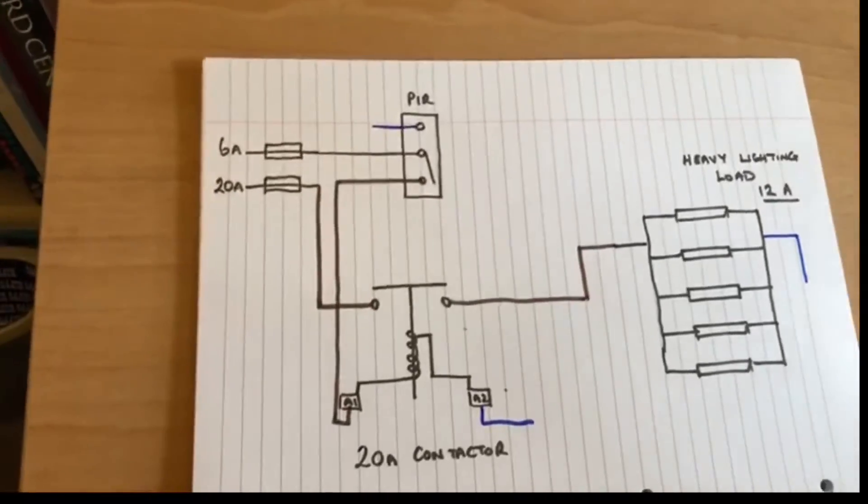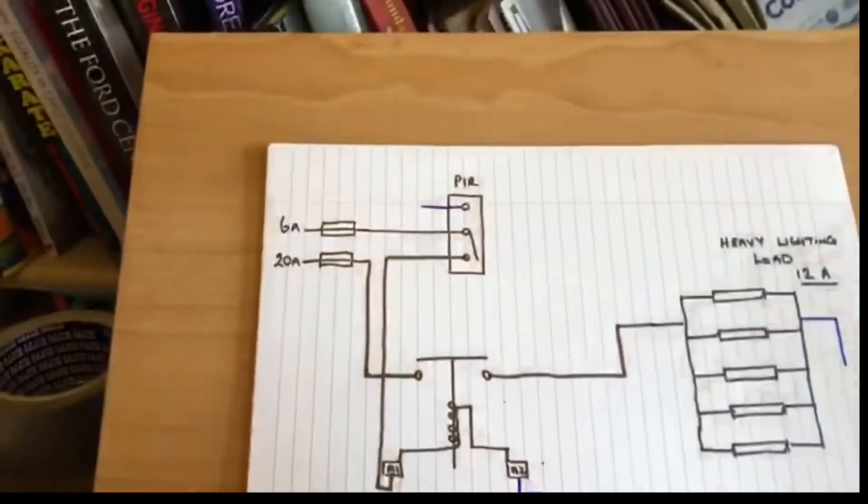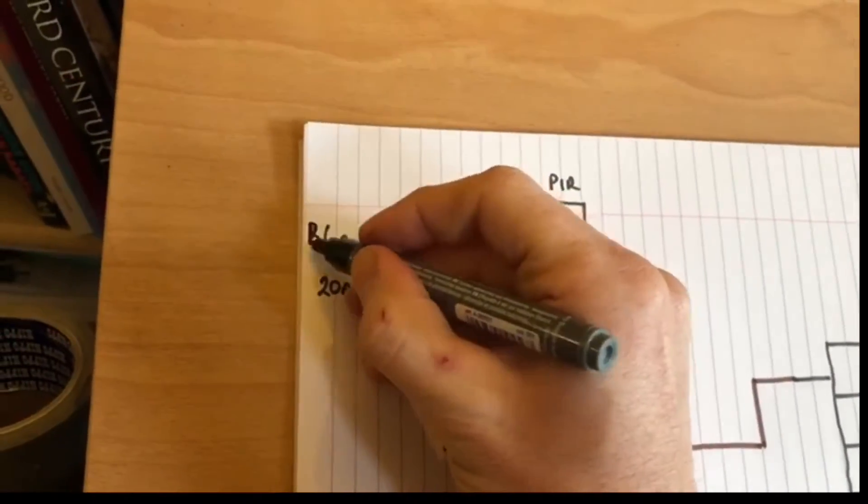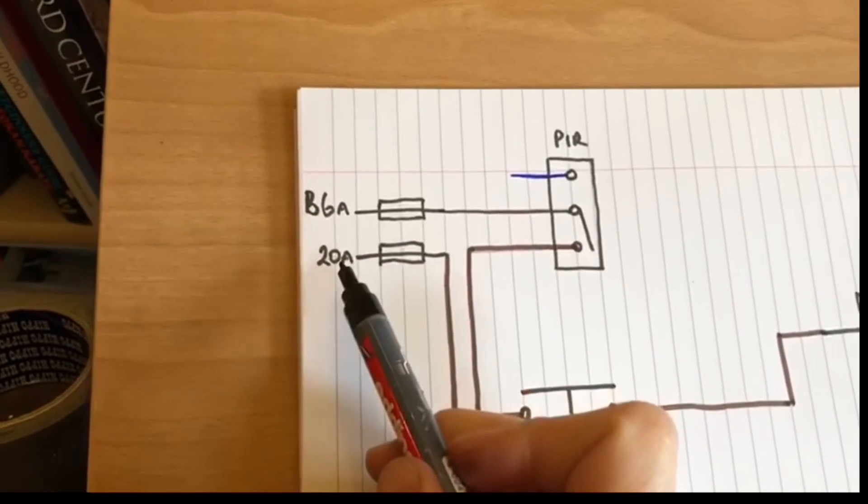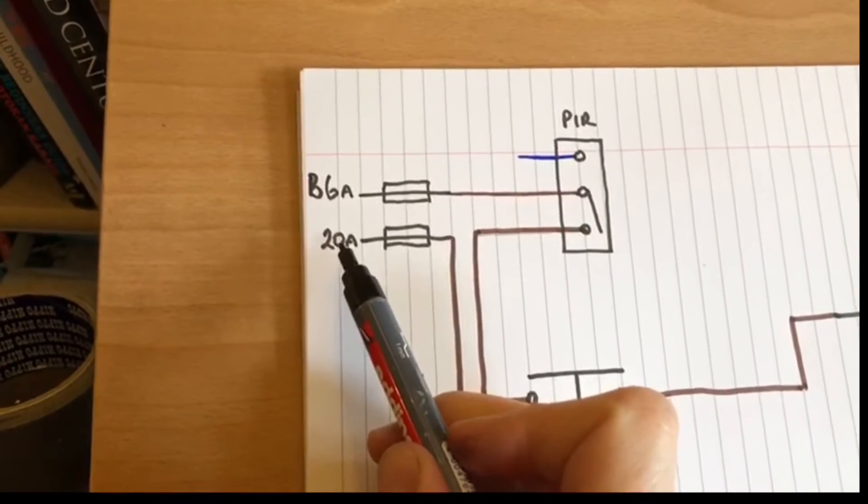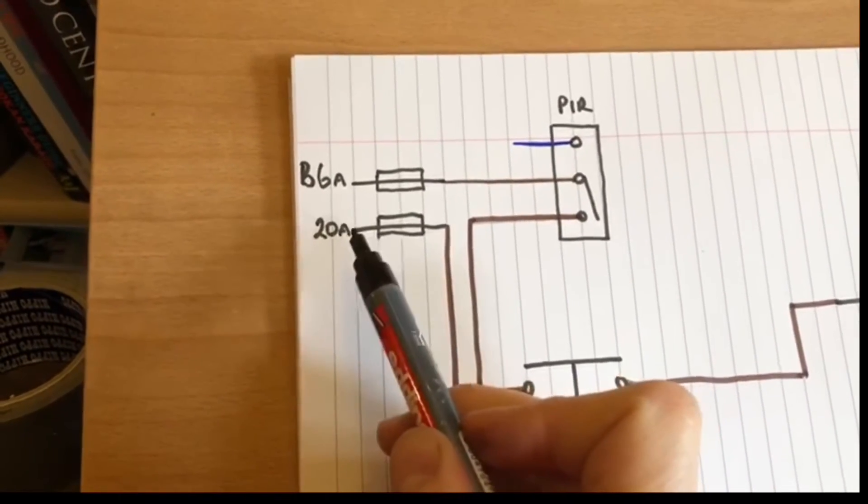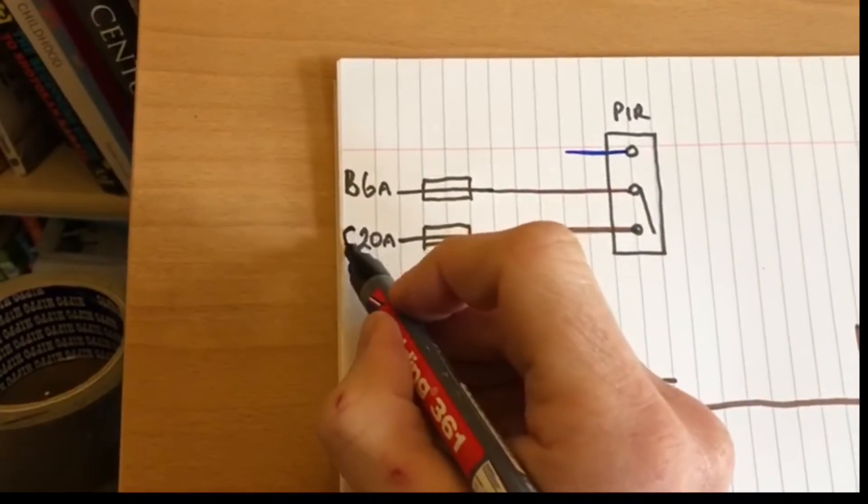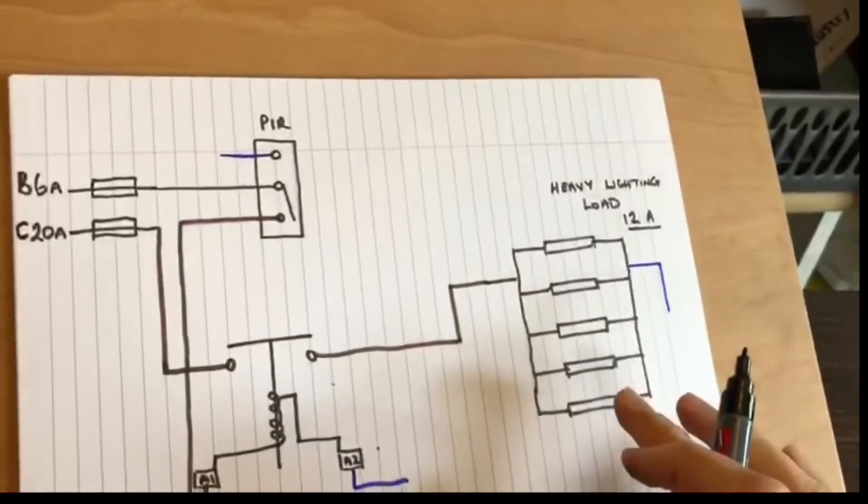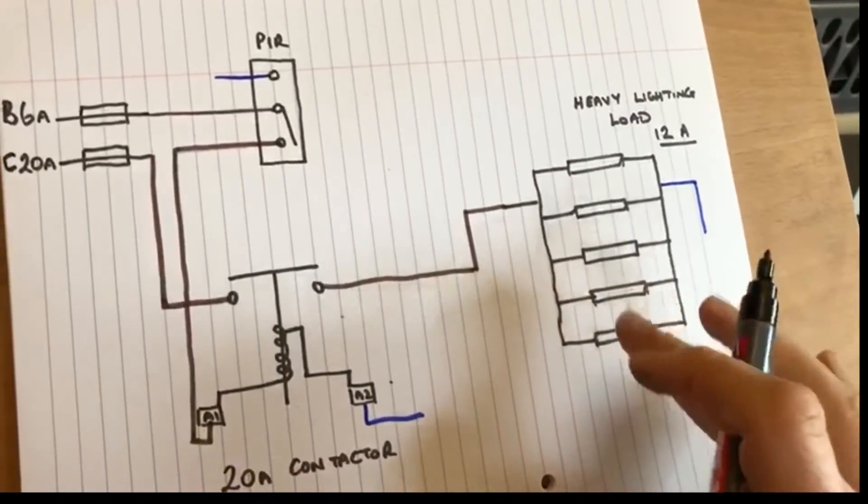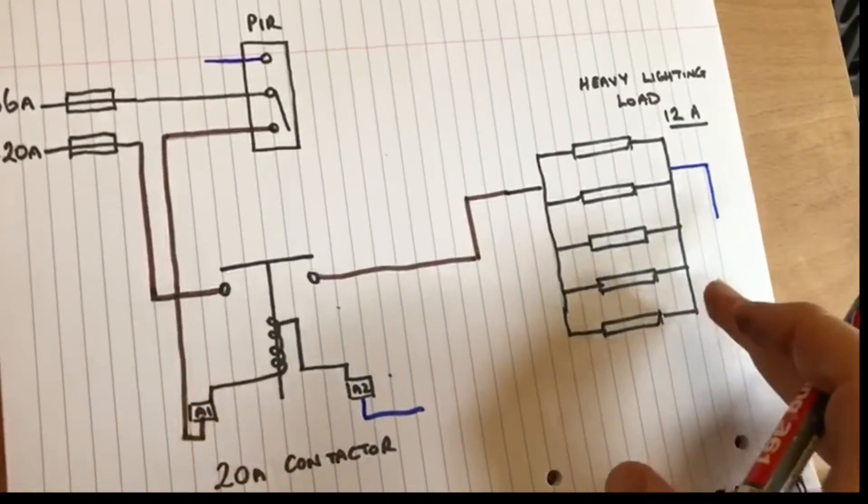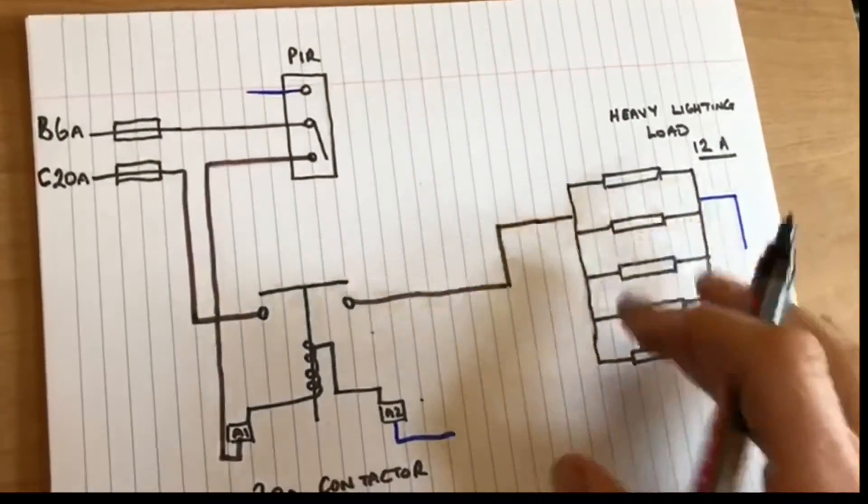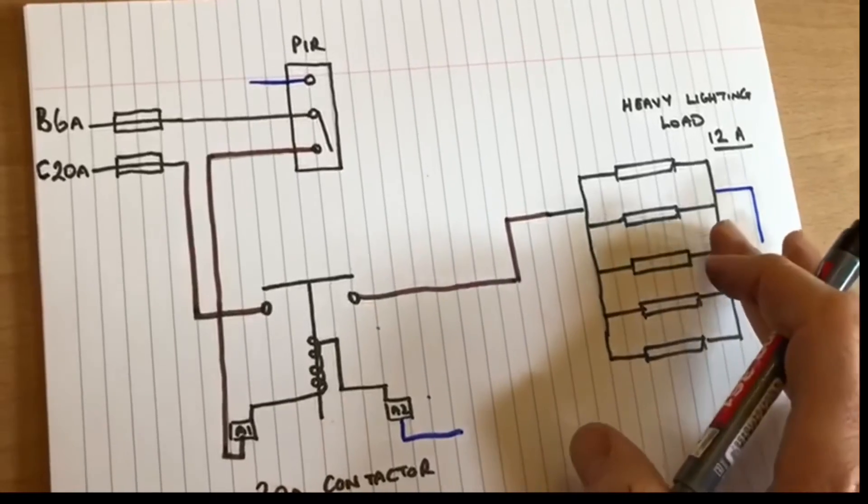Now let's just talk about the circuit breakers. The 6 amp circuit breaker only needs to be a B type circuit breaker. The other circuit breaker, and I've said a 20 amp circuit breaker but it might only be a 16 amp, that might be recommended to be a C type dependent on what the load is. Now if it's a fluorescent lighting load, it's probably important that it's a C type.